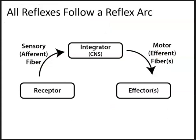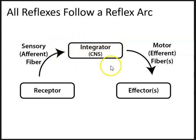All reflexes follow a reflex arc with five components. First, you have the receptor that picks up the stimulus. The stimulus is sent up a sensory or afferent fiber to the integration center within the central nervous system. From the integration center, the CNS sends a motor signal via an efferent fiber to the effector organ — the skeletal muscle or any organ that could secrete hormones. You can see these five components in the baroreceptor reflex arc.